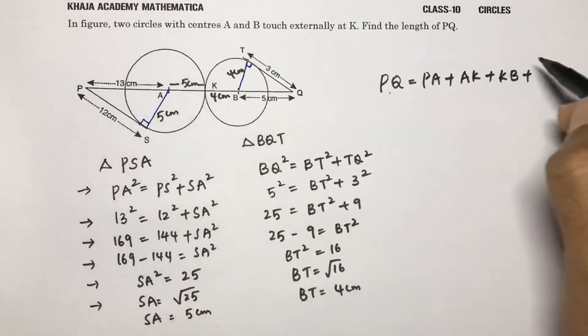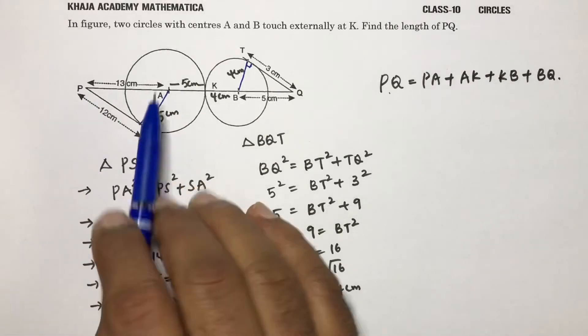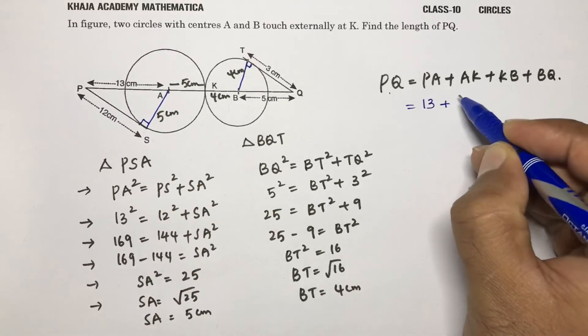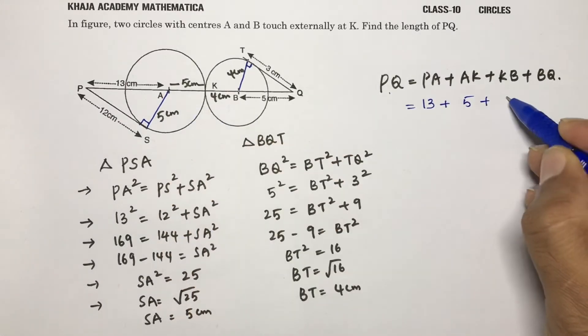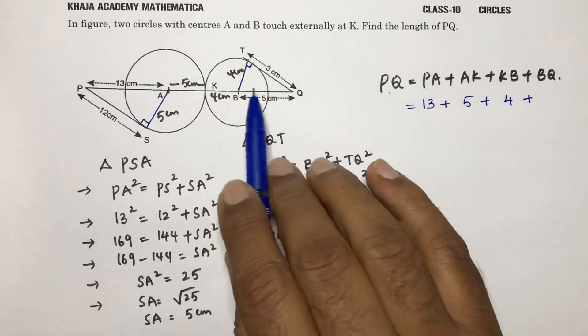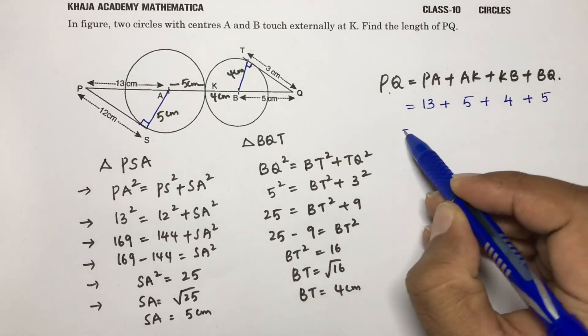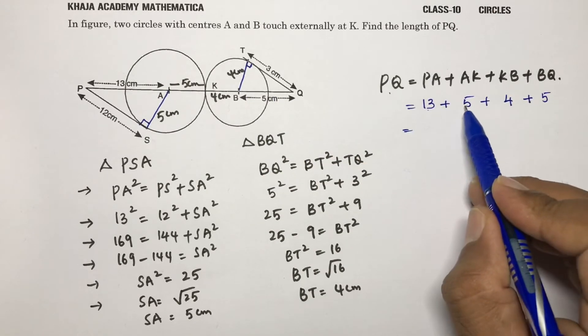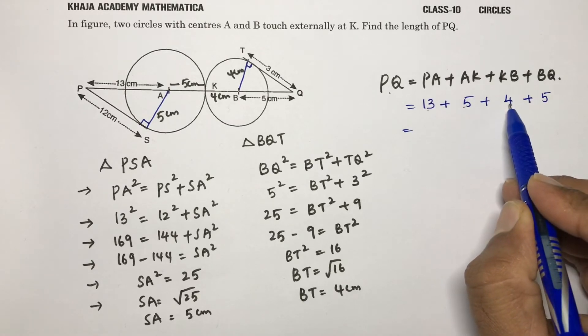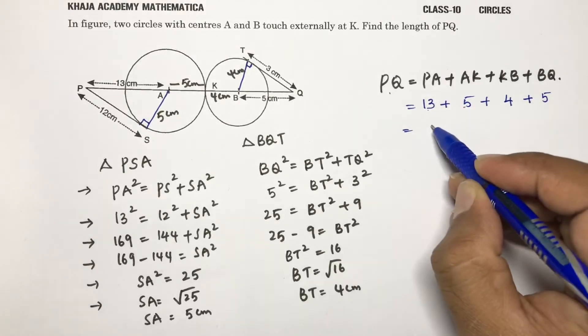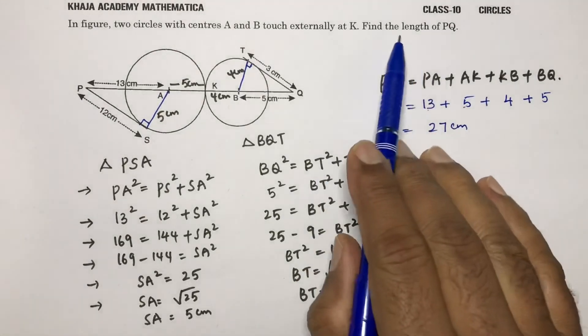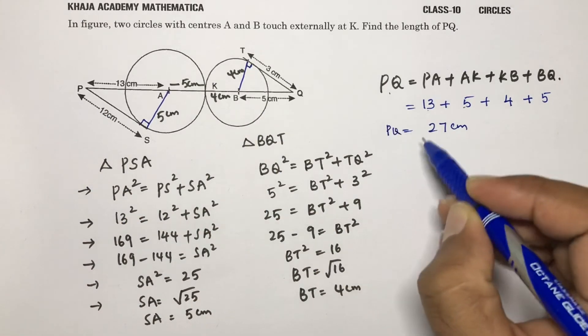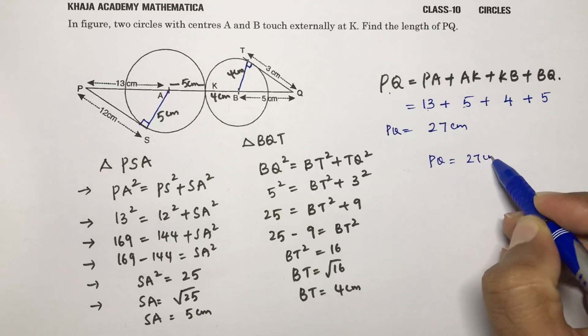Plus BQ. So if you substitute the values, PA which is 13 centimeters, AK is 5 centimeters, KB is 4 centimeters, and BQ is 5 centimeters. So 13 plus 5 is 18, 18 plus 4 is 22, 22 plus 5 is 27. So the length of PQ is 27 centimeters.